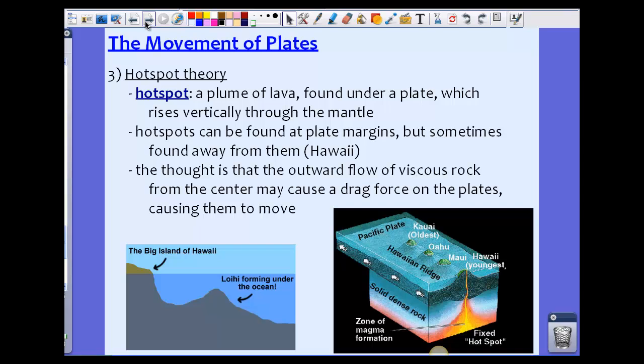The thought with this theory is that the outward flow of viscous rock from the center, from the core, may cause a drag force on the plates, which causes them to move. Some people think that hot spots help move that particular crust along. It creates this drag force once that viscous rock, or basically the magma, comes up from the center.